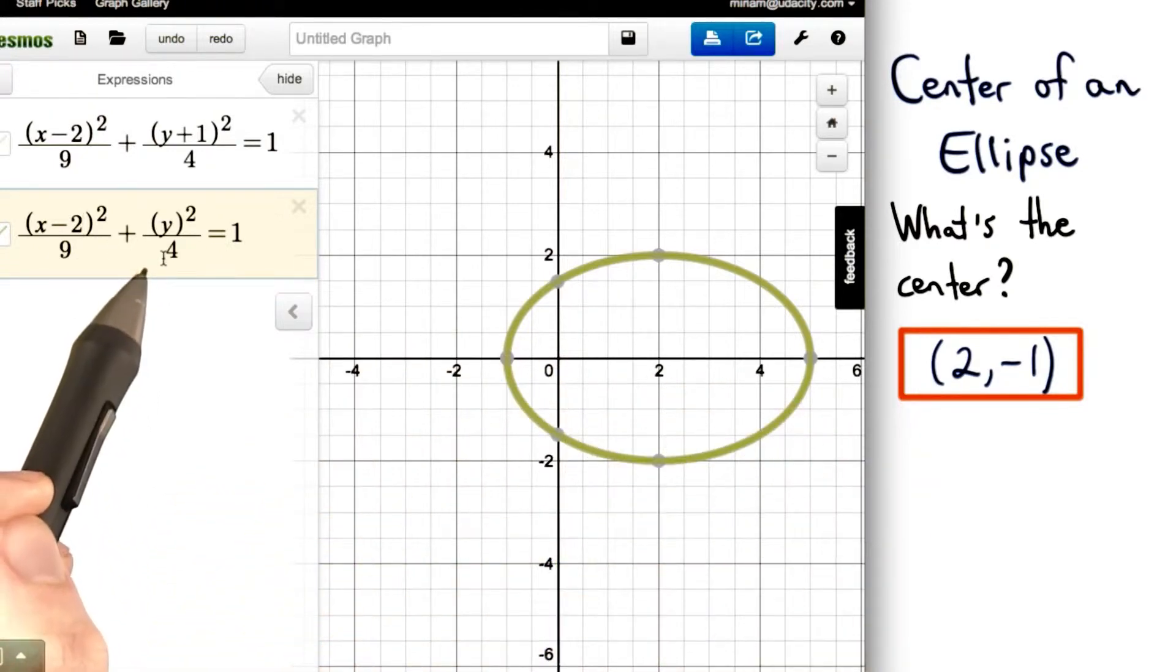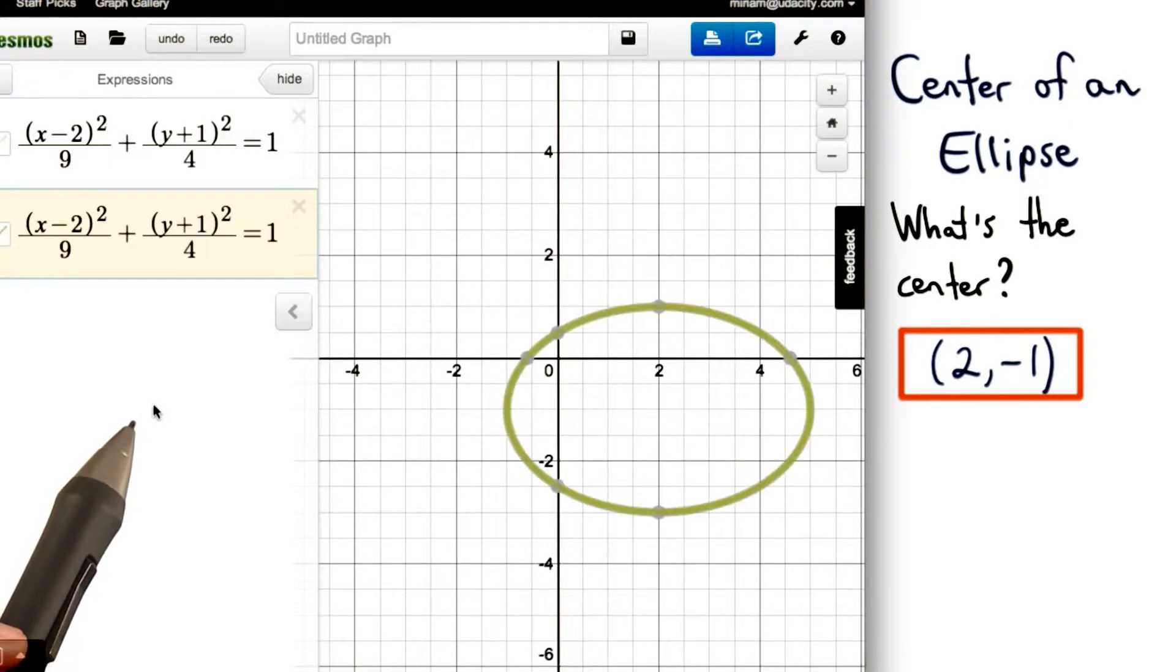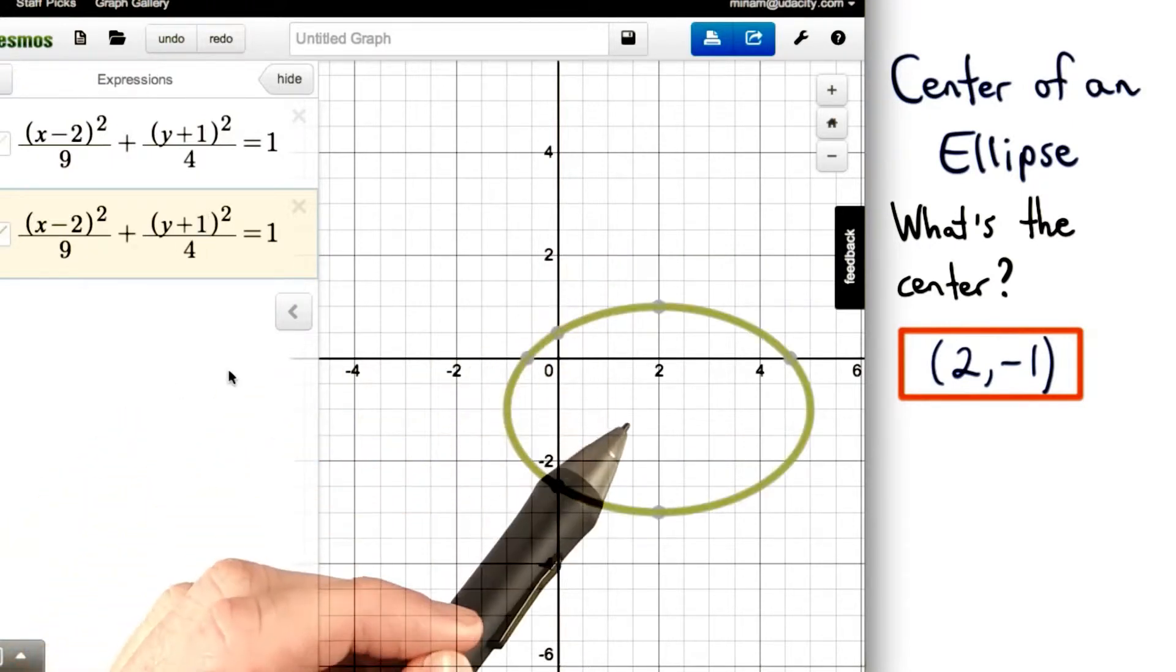Now, we just want to add 1 to y. And when we add 1 to y, our ellipse really shifts down 1 unit.